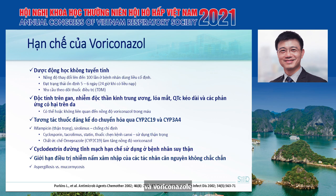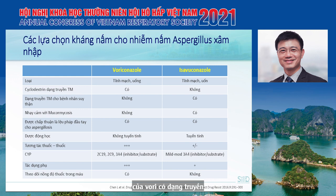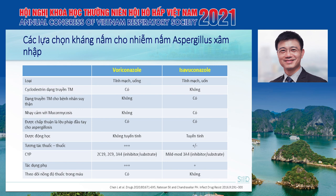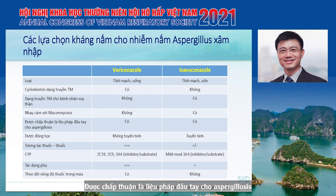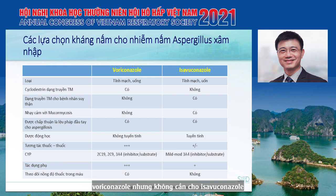The IV form of voriconazole should not be used in patients with renal insufficiency because of the cyclodextrin vehicle. Voriconazole has activity against Aspergillus but not Mucor. Isavuconazole, by contrast, does not contain cyclodextrin in its IV form, so it can be used in renal insufficiency. Isavuconazole also has activity against mucormycosis. Isavuconazole has linear pharmacokinetics with less drug interaction and fewer adverse effects, and therapeutic drug monitoring is currently recommended for voriconazole but not isavuconazole.